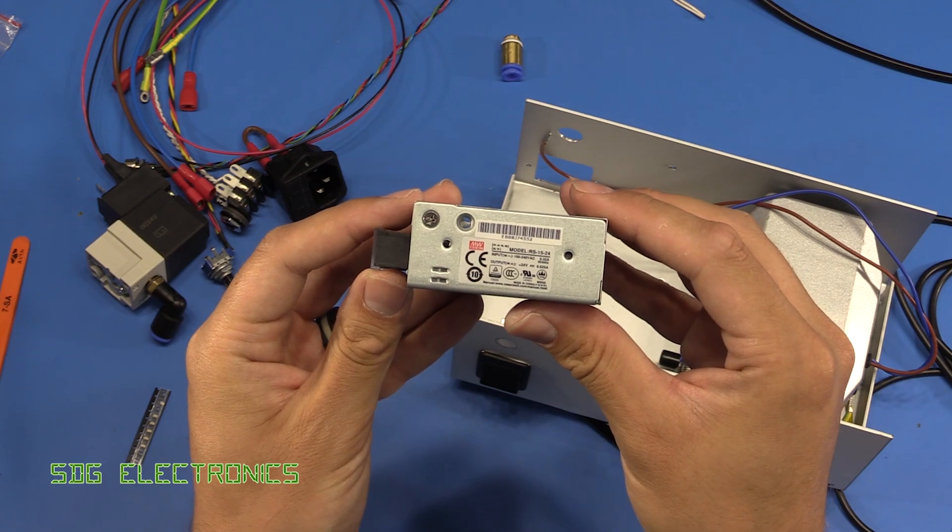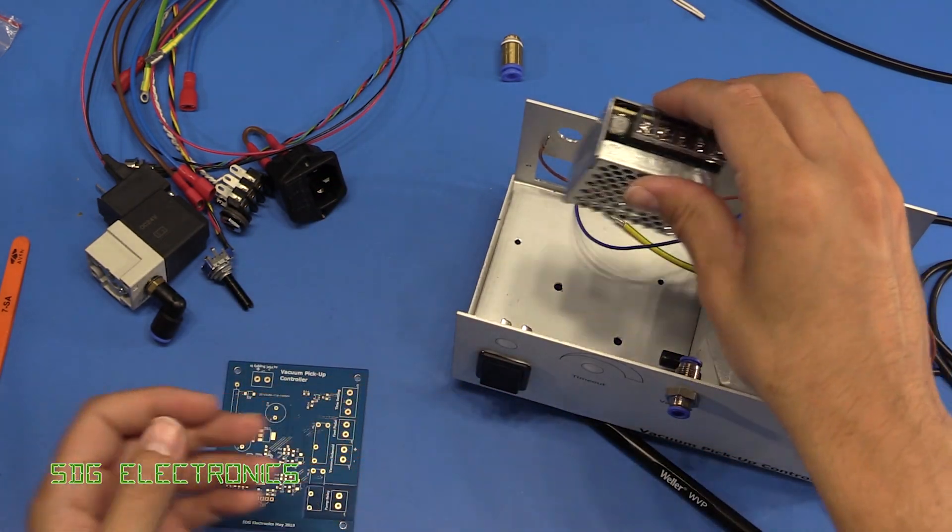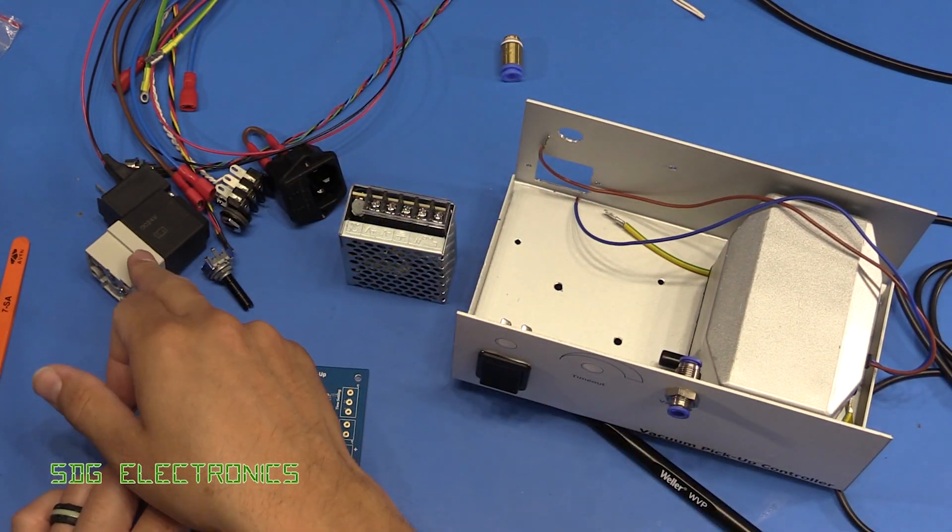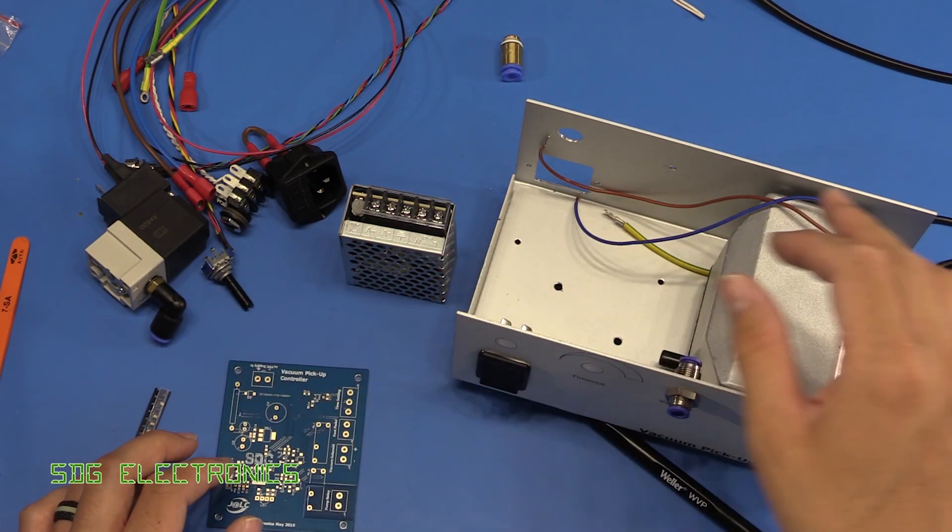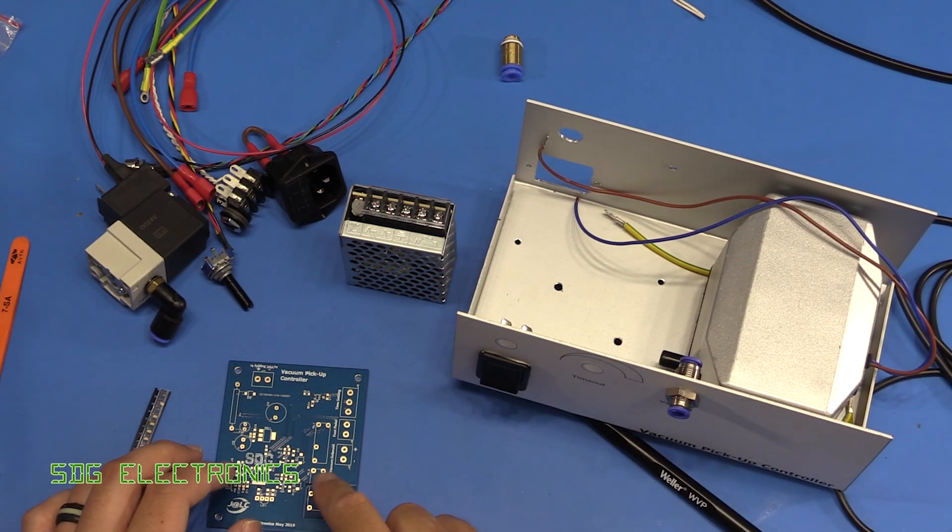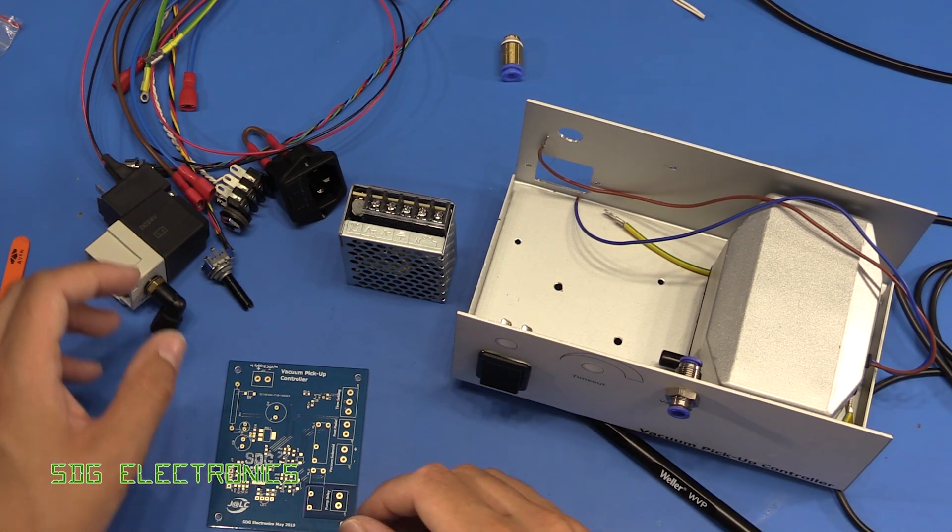We've got a little 24 volt power supply which is going to sit at the back and that will power the electronics and it's the right voltage to apply power to the solenoid. The pump is powered by mains so we've got some relays on the board.